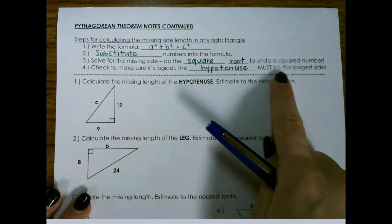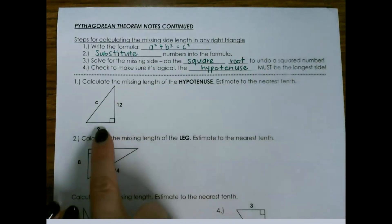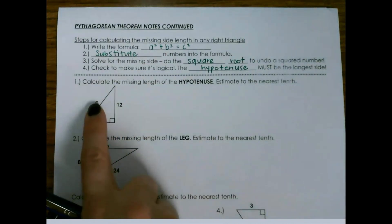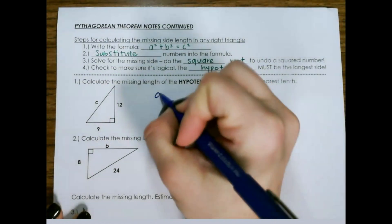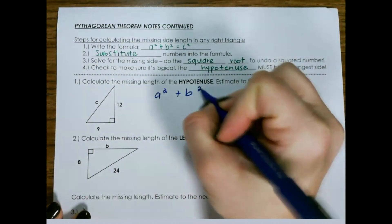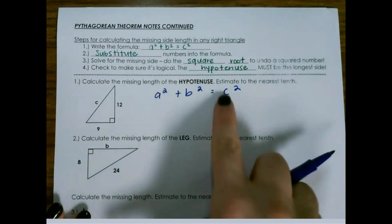The hypotenuse must be the longest side. So here's our first one. We're looking for the hypotenuse here. So a squared plus b squared equals c squared. We're looking for c.